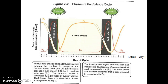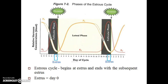Figure 7-2 is a graphical representation of the events that occur during the follicular phase and the luteal phase of the estrous cycle. Remember that each estrous cycle begins at estrous and ends with the subsequent estrous. In this figure, day 0 represents estrous. Estrous (E-S-T-R-U-S) is the time when the female is receptive to the male.